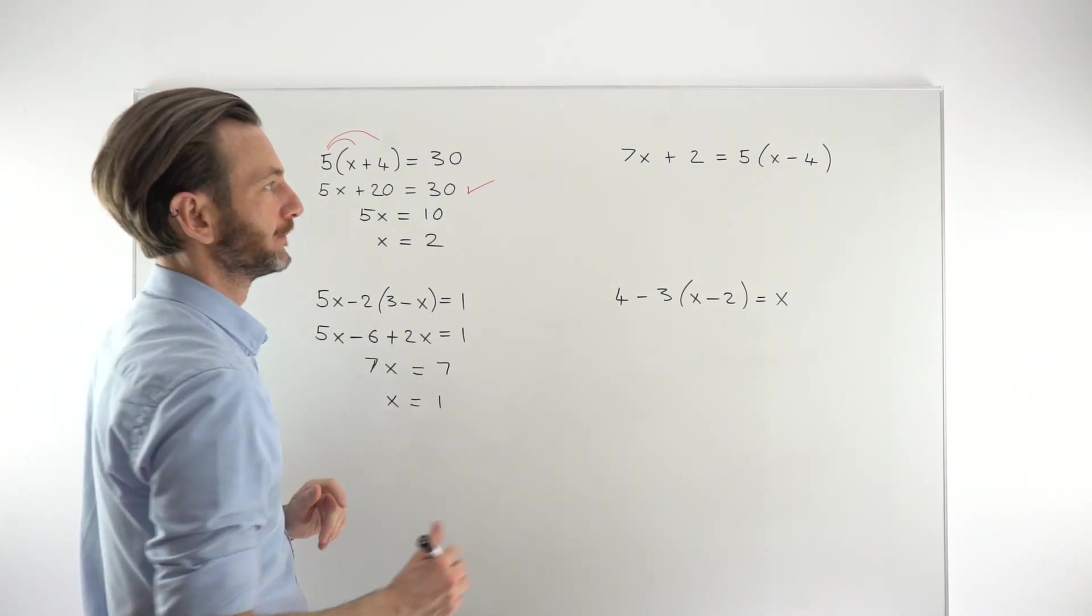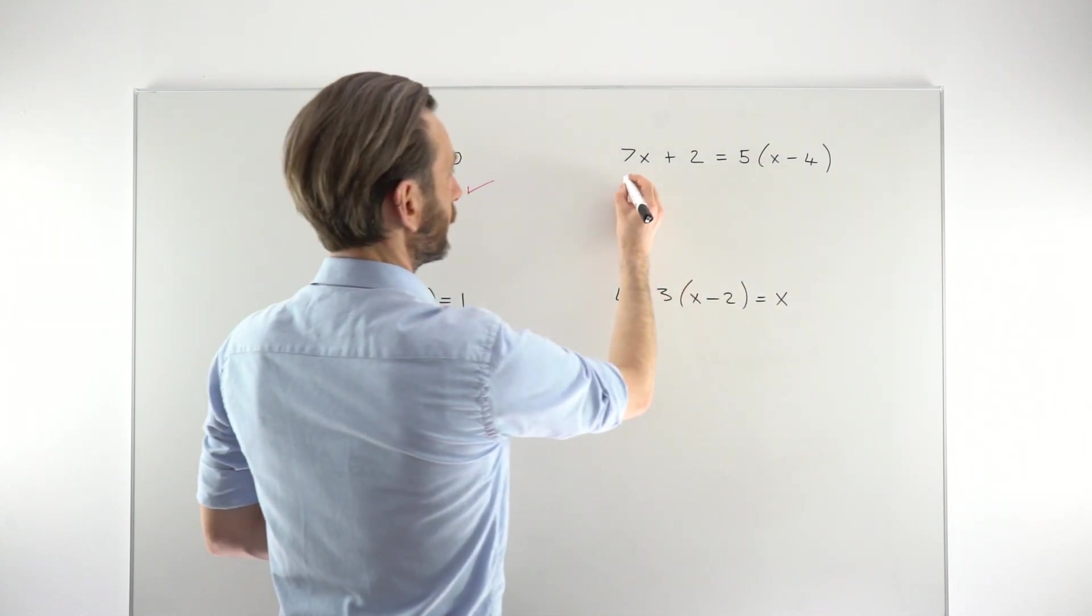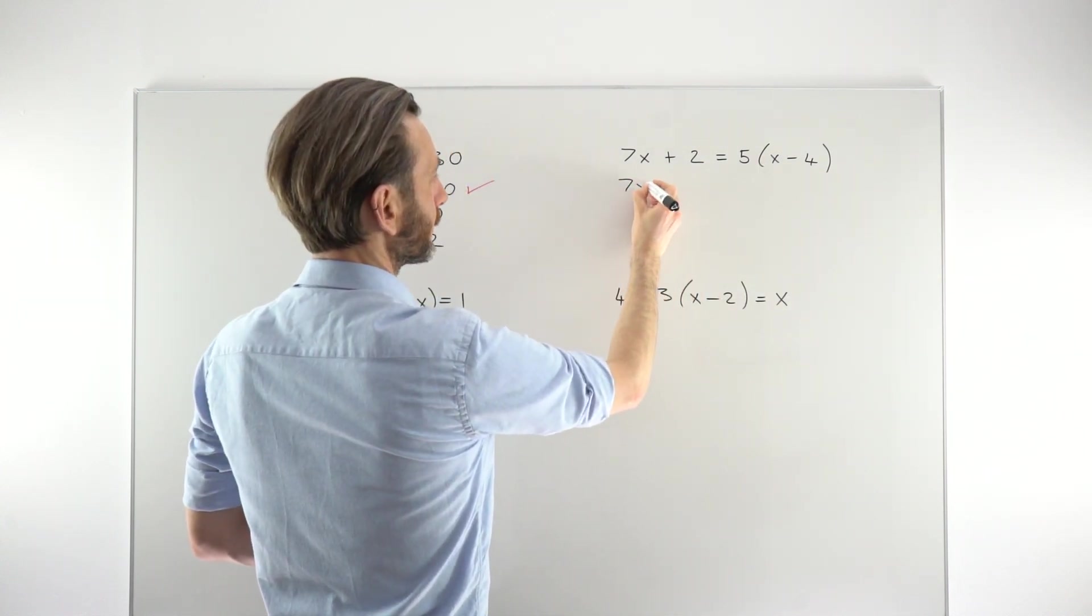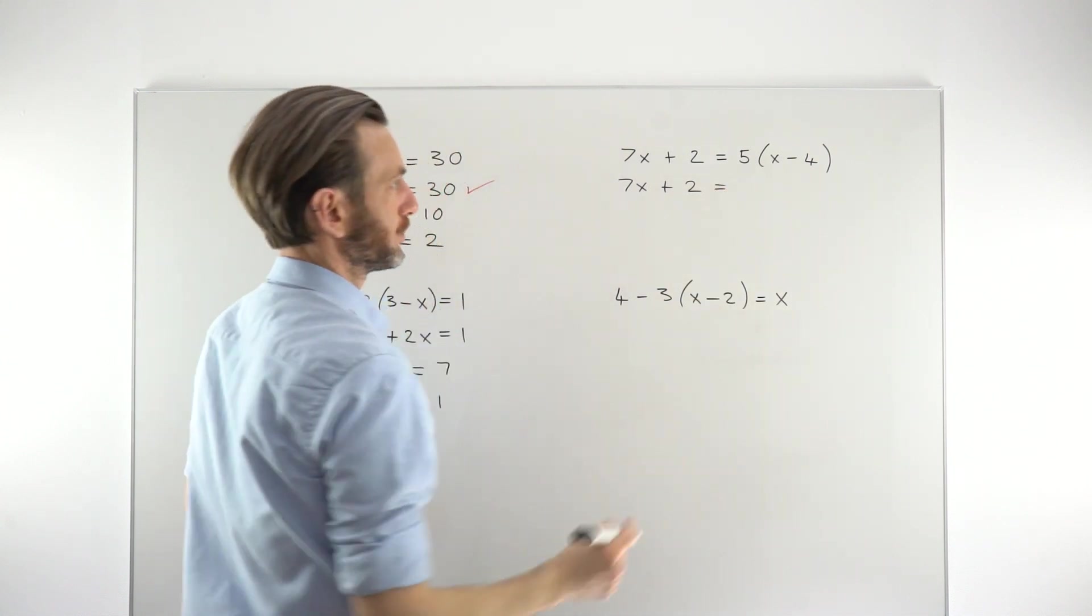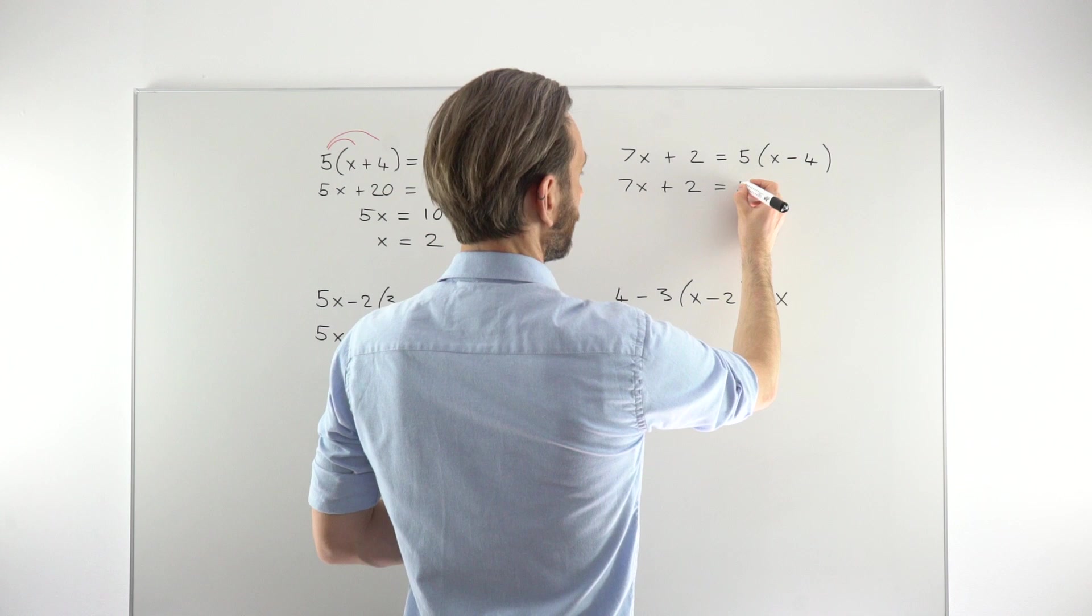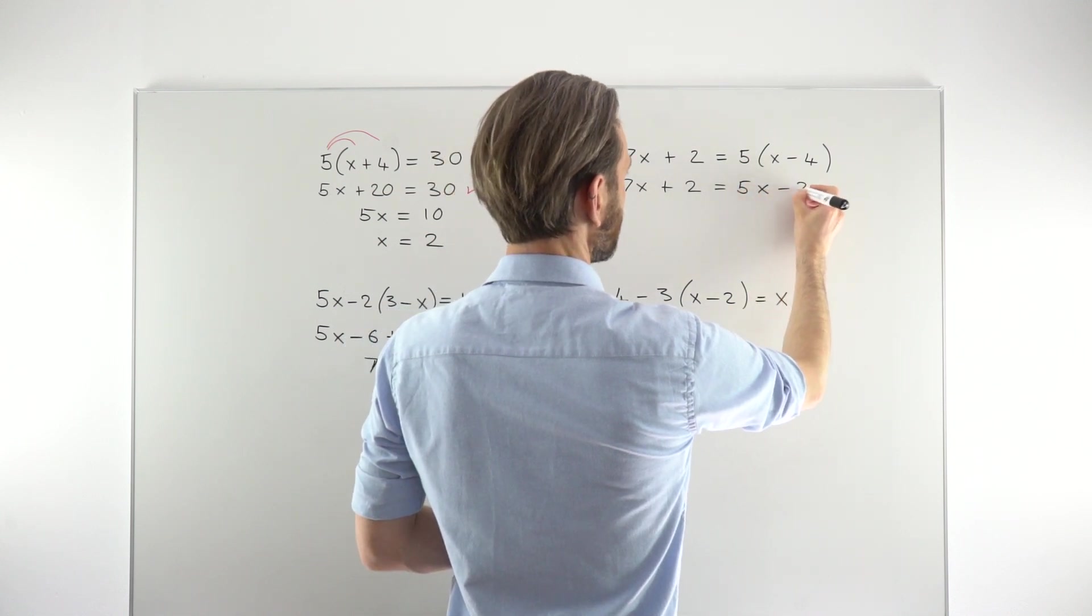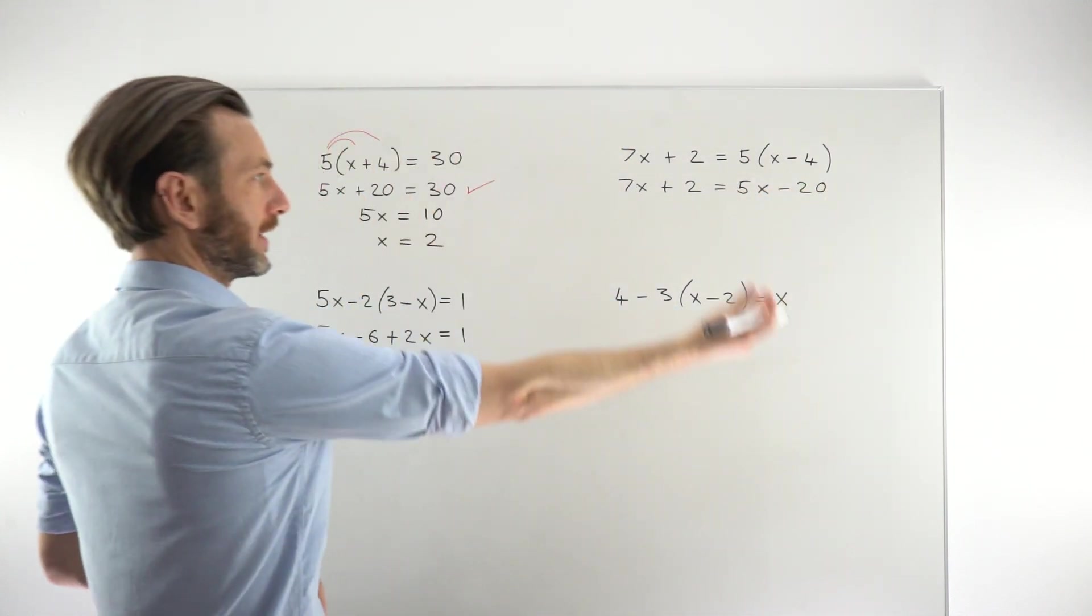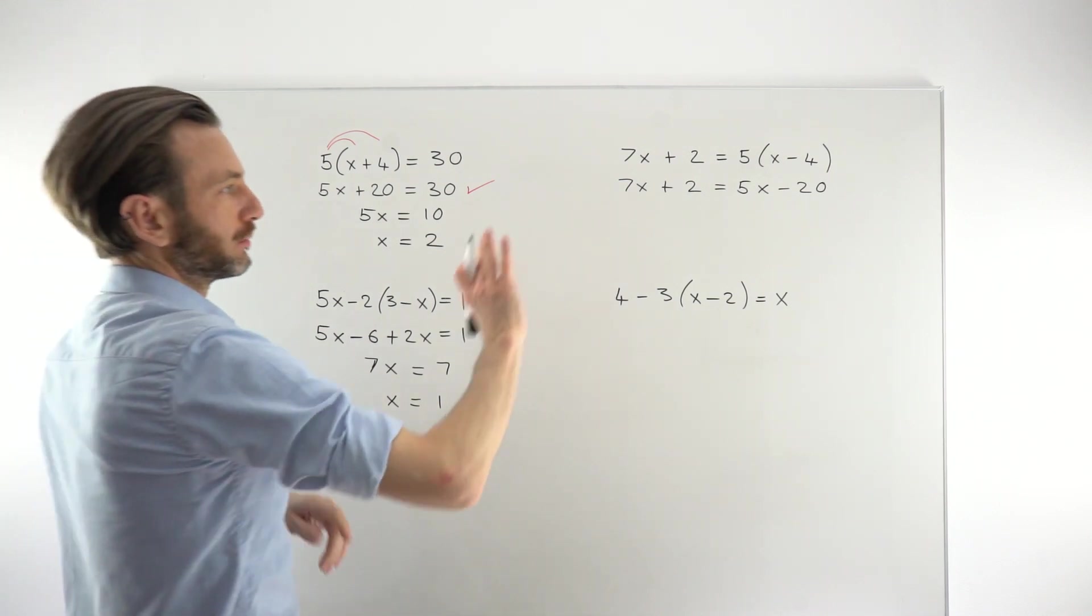Not too bad. So this one up here, similar idea. We're just going to leave the left-hand side alone as we work on, first of all, expanding out the bracket. So 5 times x to give us 5x. 5 times negative 4 to give us negative 20. I'm going to gather the x's on the left again and the numbers on the right.